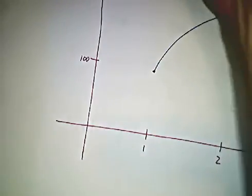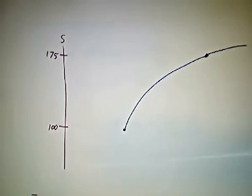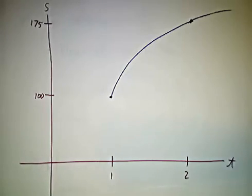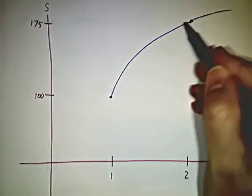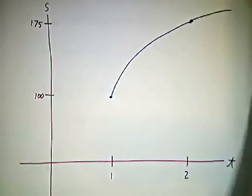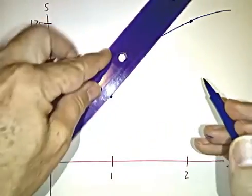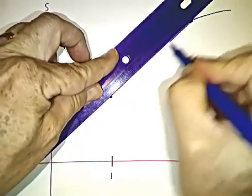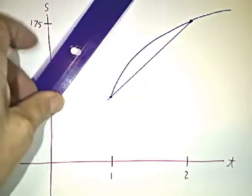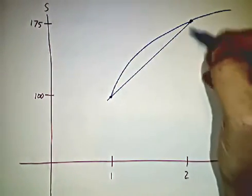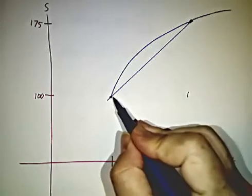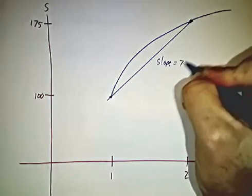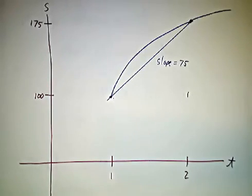Let's look at the same problem in pictures. So what you have is if you plot where you are as a function of time, at time two you're at 175, at time one you're at 100. When we computed the average velocity for the last hour, what we were really doing is computing the slope of that line. The rise is 75, the run is 1, and we got that the slope was 75. That's your average velocity for the last hour.